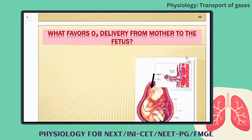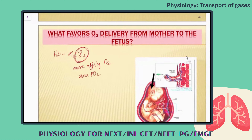In fetal circulation, hemoglobin has an alpha-2 and gamma-2 subunit in its structure. This gamma-2 subunit has more affinity with oxygen, even if the partial pressure of oxygen is less and the partial pressure of carbon dioxide is more. It will never detach from hemoglobin, because the fetus requires more oxygen for its transfer. That is due to the alpha-2 gamma-2 subunit of fetal hemoglobin.